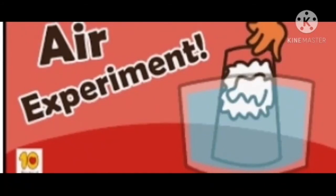Here we are going to see the properties of air. Air occupies space, air has mass, and air exerts pressure. First, let's understand how air occupies space. When you fill air into a balloon, it enlarges — this is because of the air filled in it, and this shows that air occupies space.